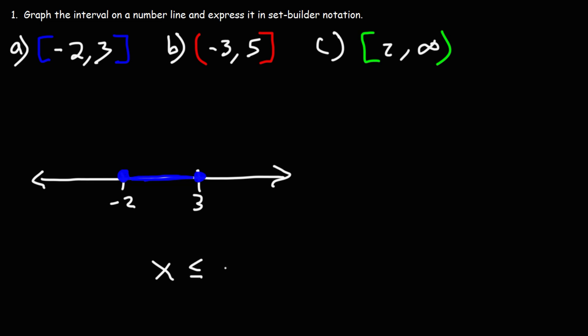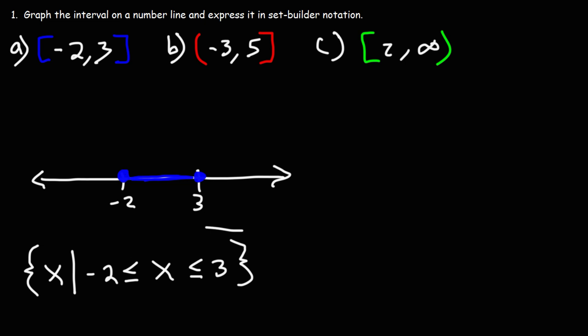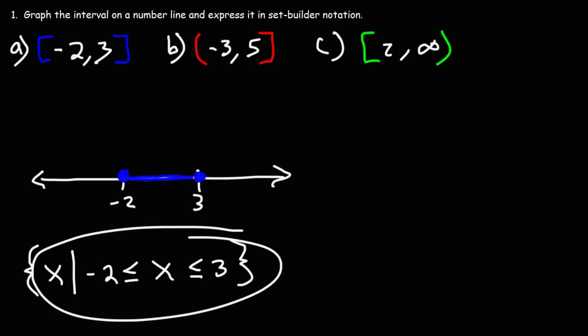So x is less than or equal to 3 — it includes 3 — but it's also greater than or equal to negative 2. And this is how we can put it in set builder notation. This is the answer on a number line, and this is the answer in set builder notation. That's it for part A.